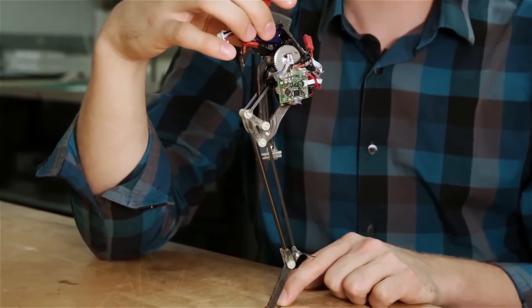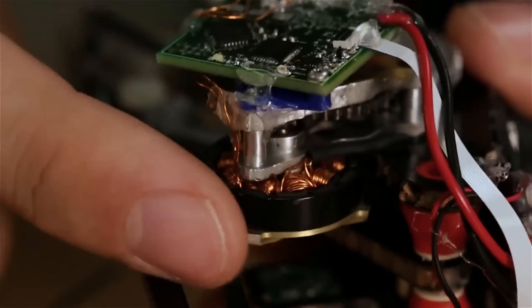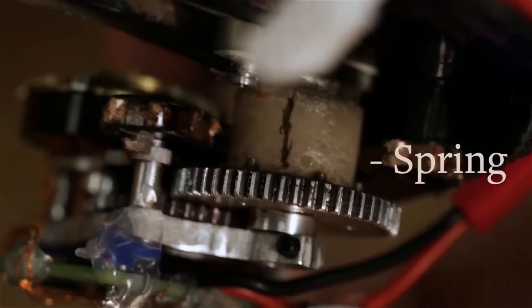We built into SALTO the capability for a super crouch. What that allows is to have the motor be able to stretch out the spring and keep the robot crouched for longer.